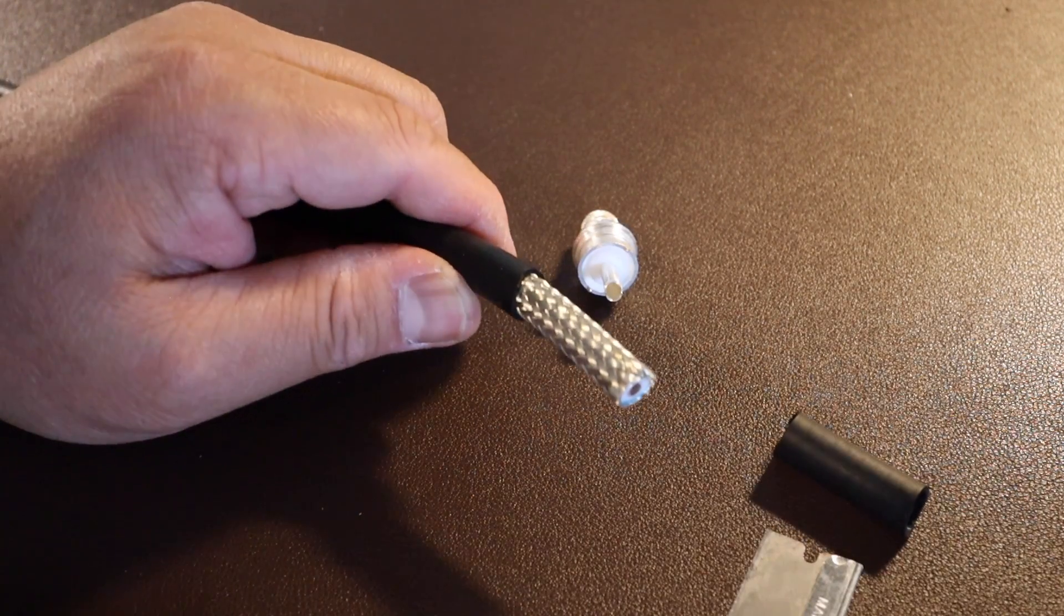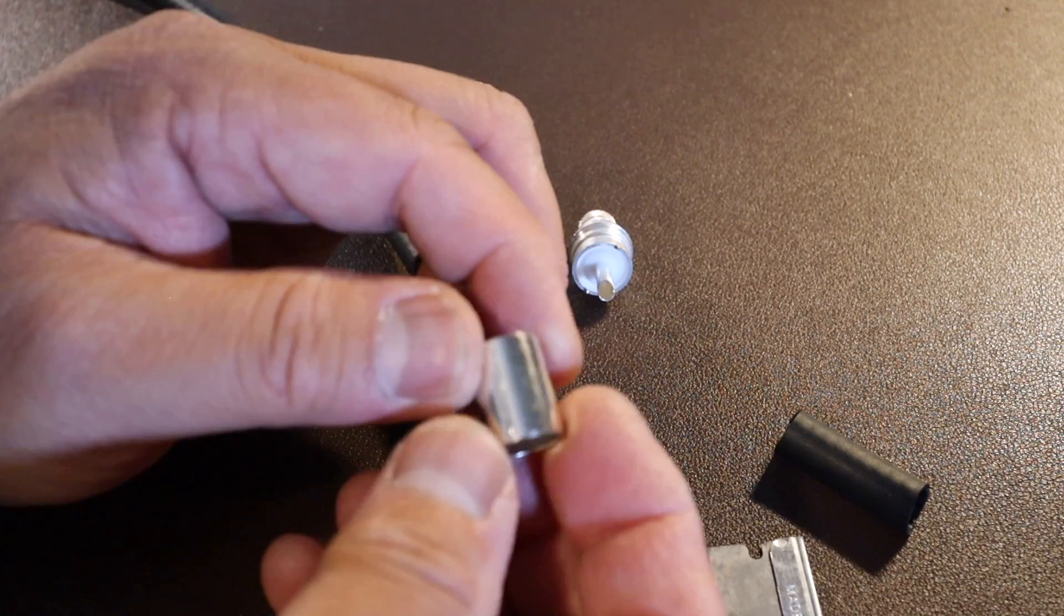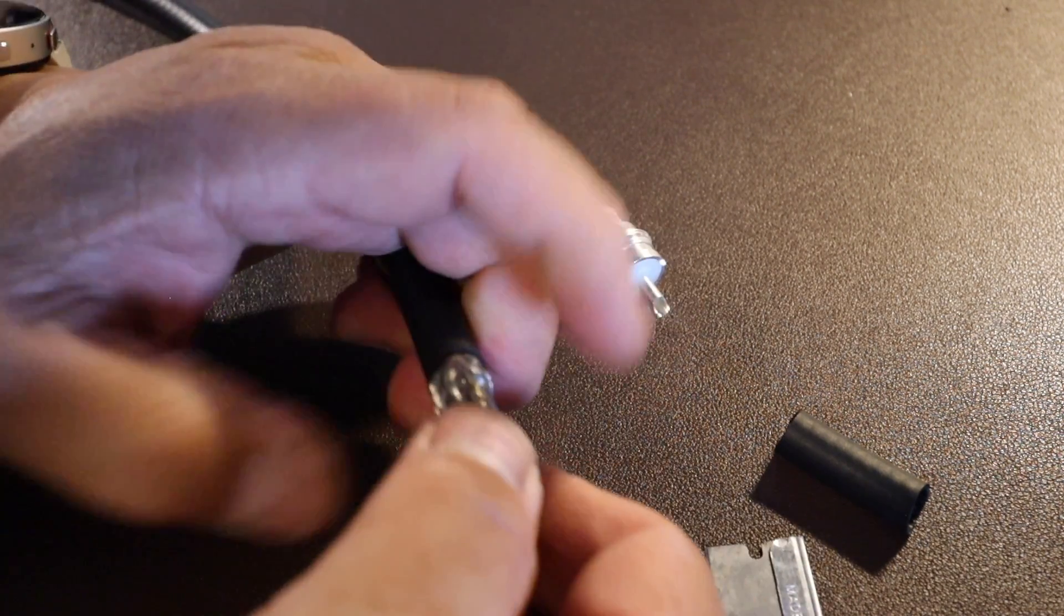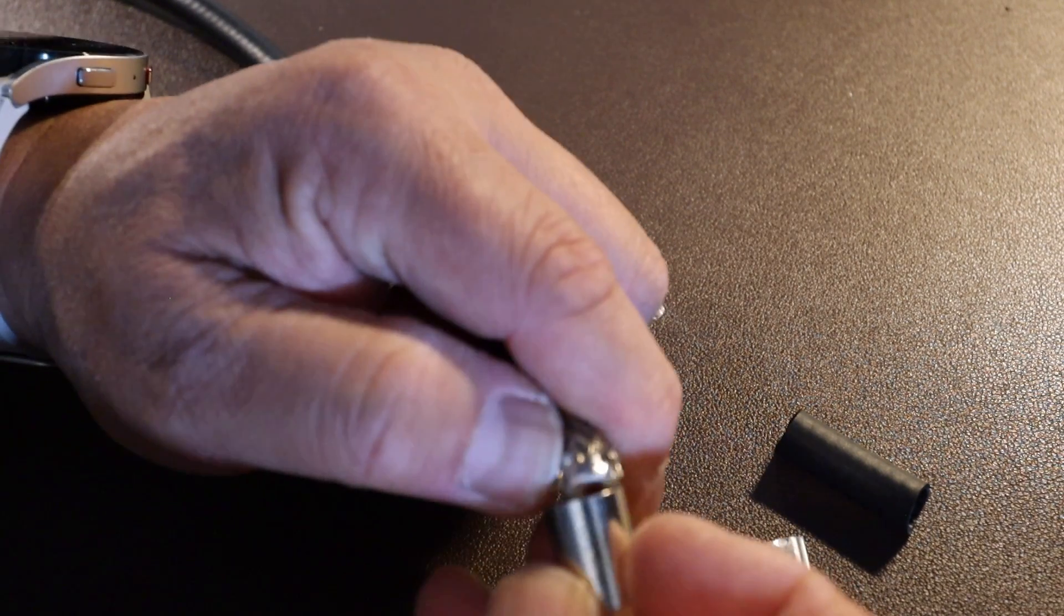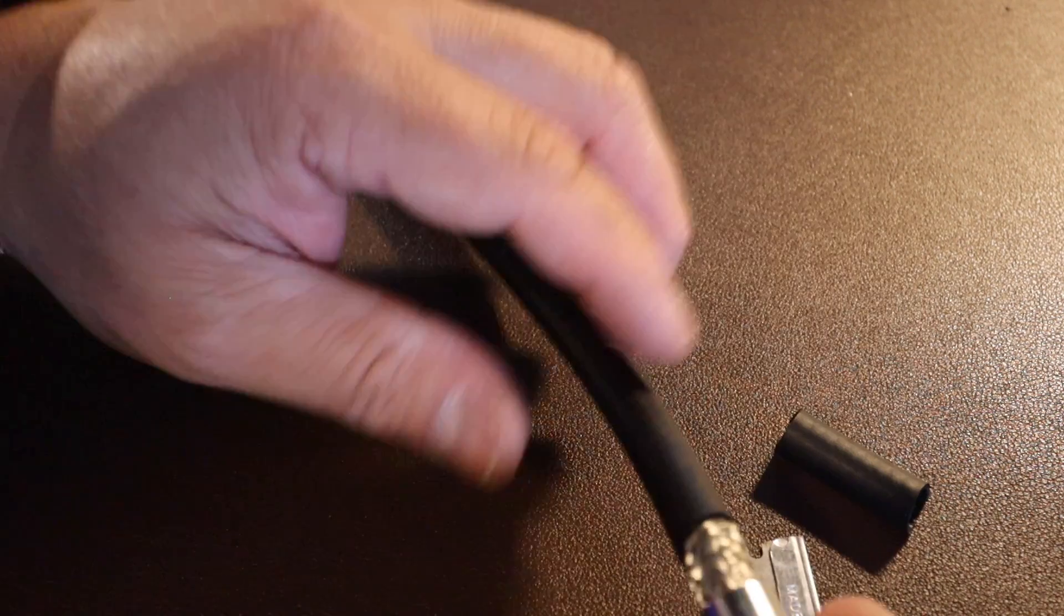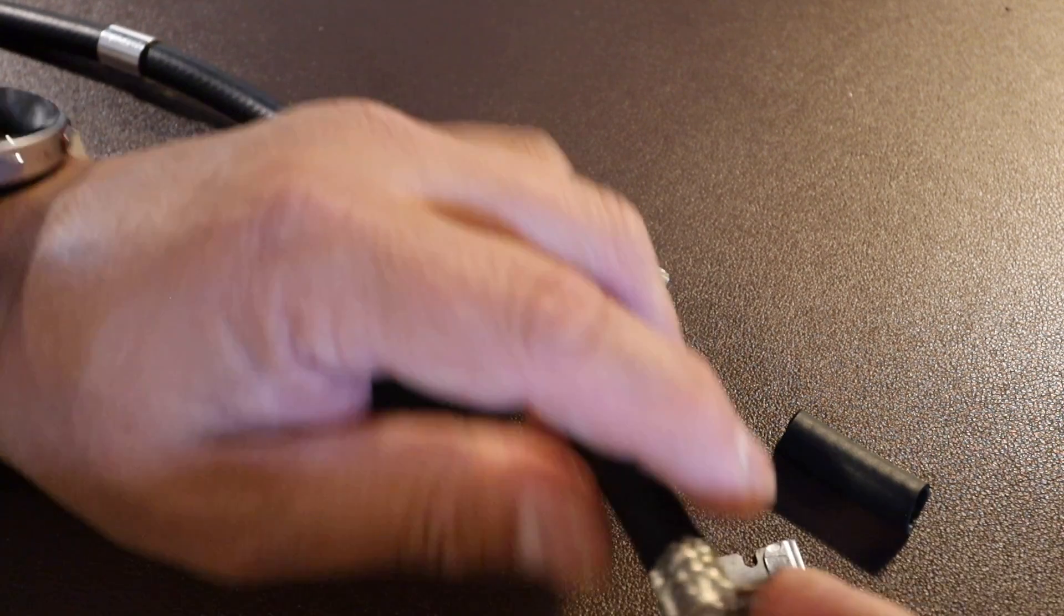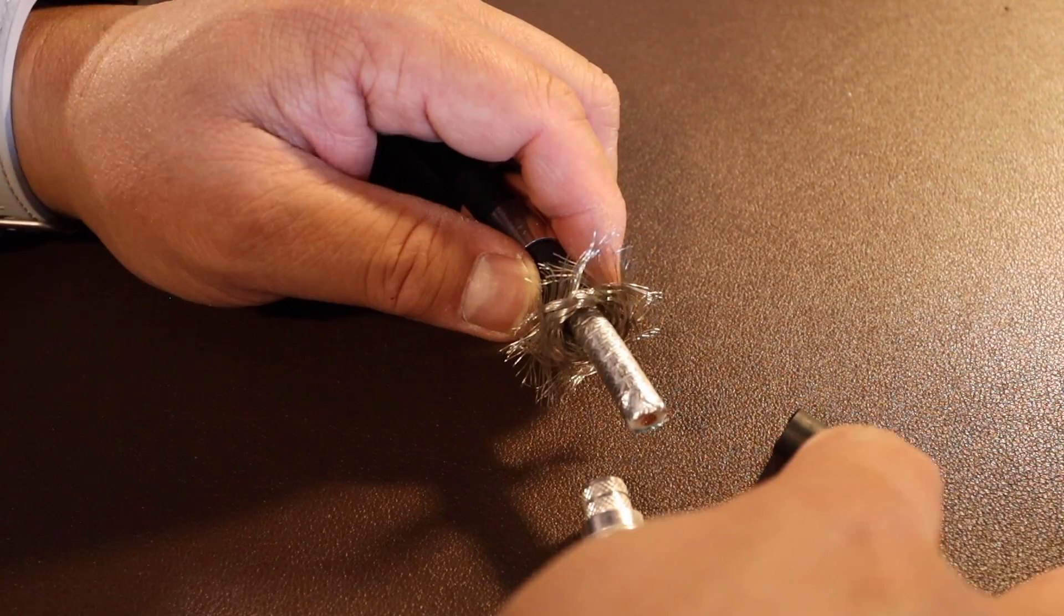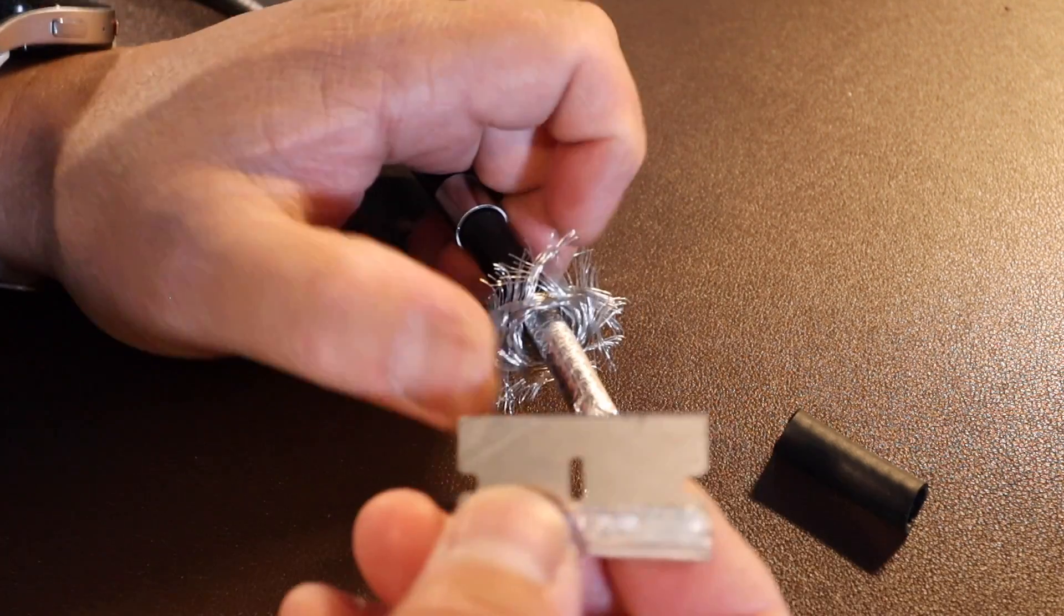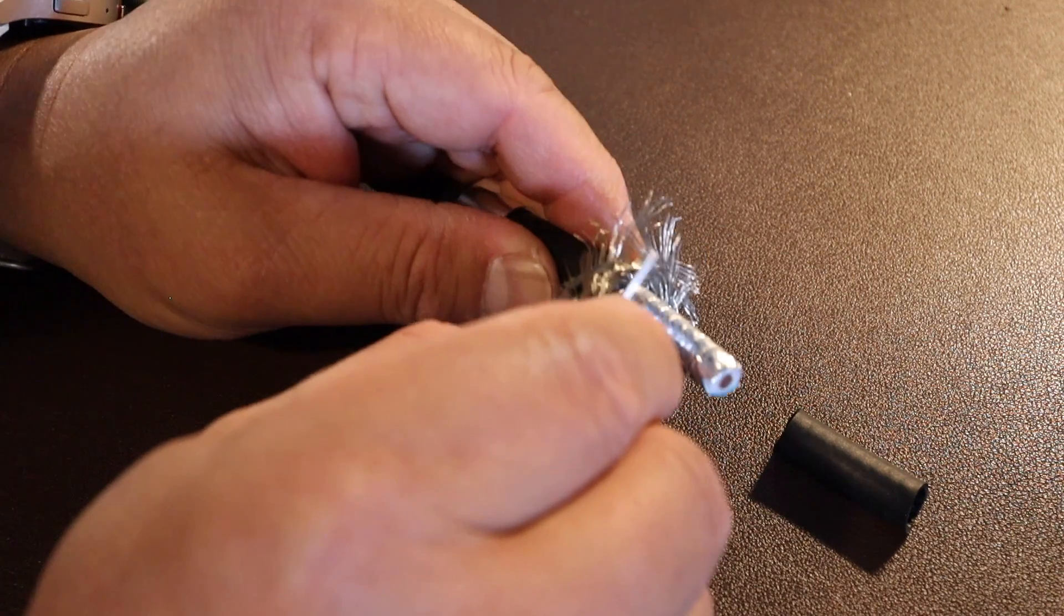So that's removed. We're going to take this apart. We have to put this through the crimping portion. There you go. Got it in. Now, pull the braid back. I'm going to take my straight edge or my razor. I'm going to cut away the other shield, the foil portion.